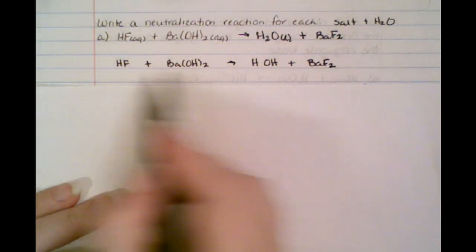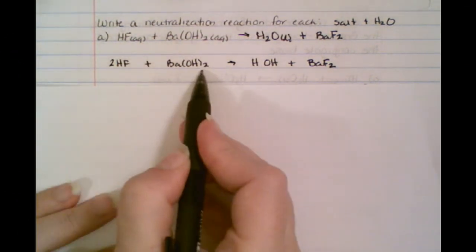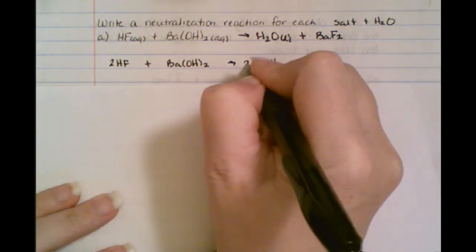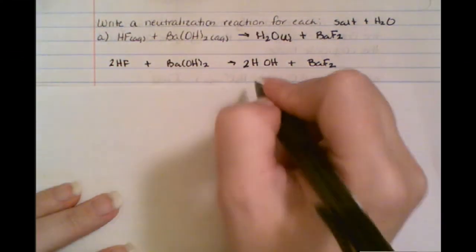I notice that I have one F here, I've got two on the right, so I'm going to put a two here. That gives me two hydrogens and there's also two OH's, so I put a two here. Now would you like to leave it like that? That's great. Just make sure that if you see that on an exam, it would probably actually be written as 2 H2O.